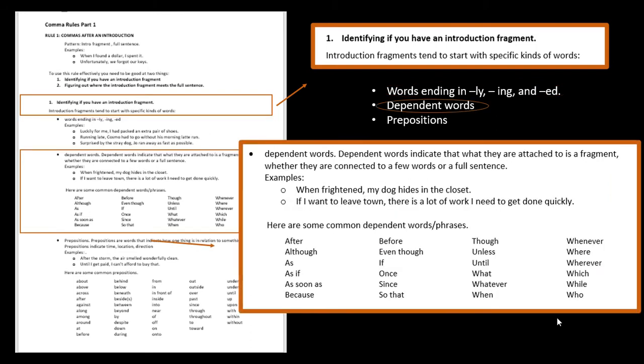Dependent words you've already been practicing recognizing when you have dependent words. So the example when frightened my dog hides in the closet. When is a dependent word so you know that that starts an introduction fragment. Or two, if I want to leave town there's a lot of work I need to get done quickly. If is a dependent word. So get used to spotting those dependent words. When, if, as, because those are the really common ones to watch out for.